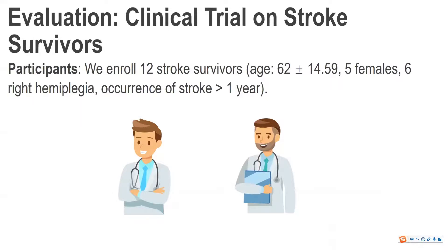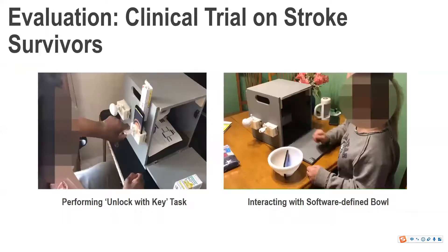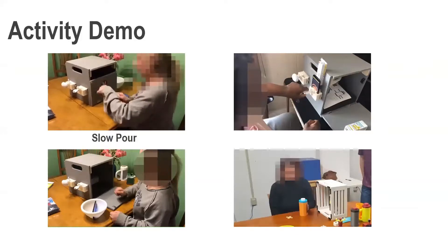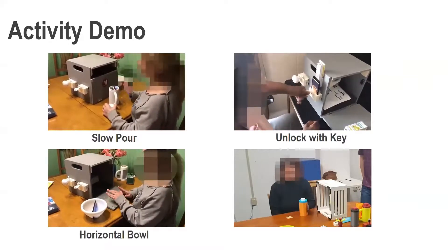Finally, we conducted a clinical trial on 12 stroke survivors. The total intervention program lasted for six weeks. At the beginning, our occupational therapists assessed the baseline and conducted initial training for each participant. The occupational therapists also conducted home visits at midterm and post-intervention. Here are some activity demos recorded during the midterm assessment: slow pull, unlocking with a key, horizontal ball, and horizontal mark.